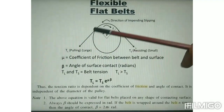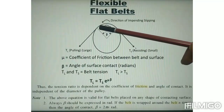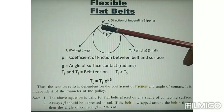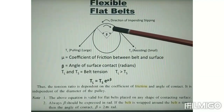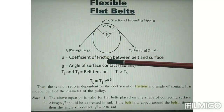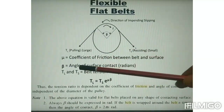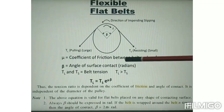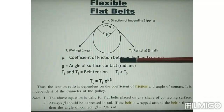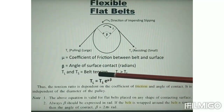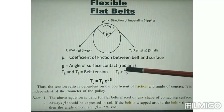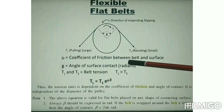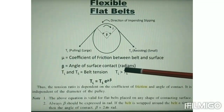Since the impending motion of the belt is in the anti-clockwise direction, the frictional force acts in the clockwise direction over the contact angle of β. The coefficient of friction between the belt and surface is μ, and β is the angle of surface contact in radians — not in degrees. TL is the tension in the tight side and TS is the tension in the slack side. Always TL will be greater than TS.